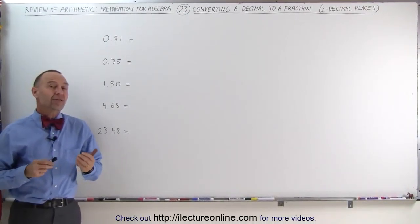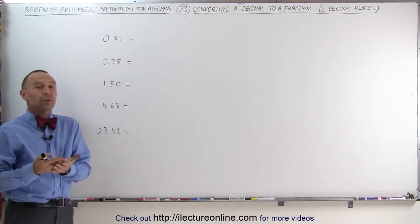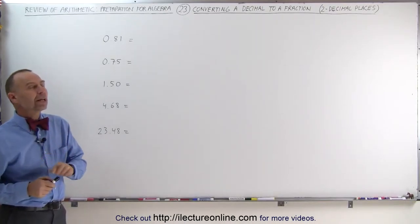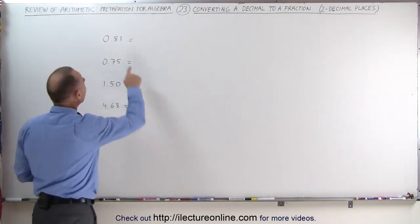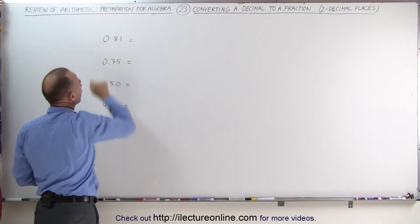Welcome to our lecture online. Now let's tackle two decimal places. We're going to convert a decimal with two decimal places to a fraction. The best way to do that is to look at it this way. We have two decimal places here, meaning we have two numbers past the decimal point.